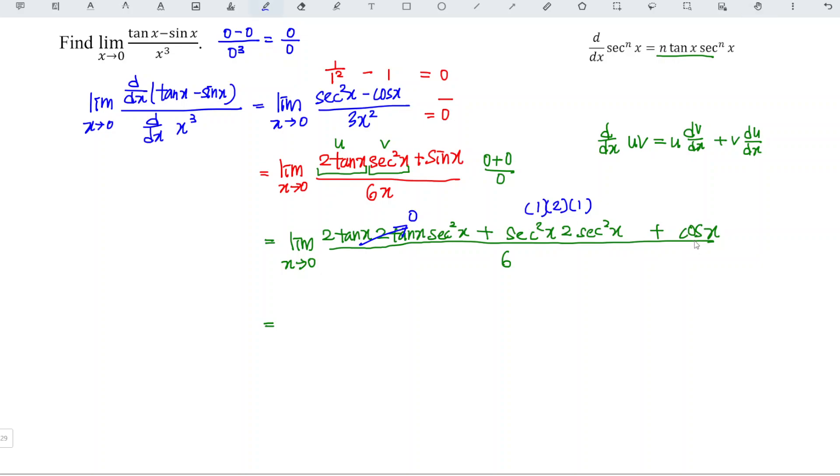And cos(0) is 1, which means we have 2 + 1 over 6. And this equals 3 over 6, and hence we have 1/2.